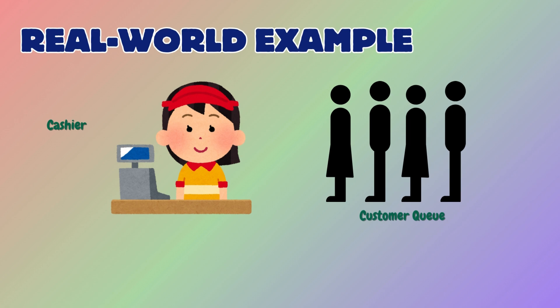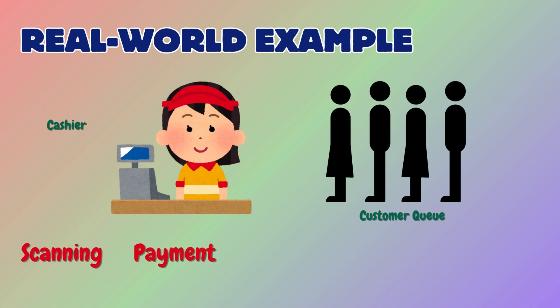Imagine a single cashier at a grocery store managing multiple customers. The cashier handles one customer at a time but switches between scanning items, processing payments, and bagging groceries. The cashier is not helping all customers simultaneously but is efficiently managing multiple tasks.